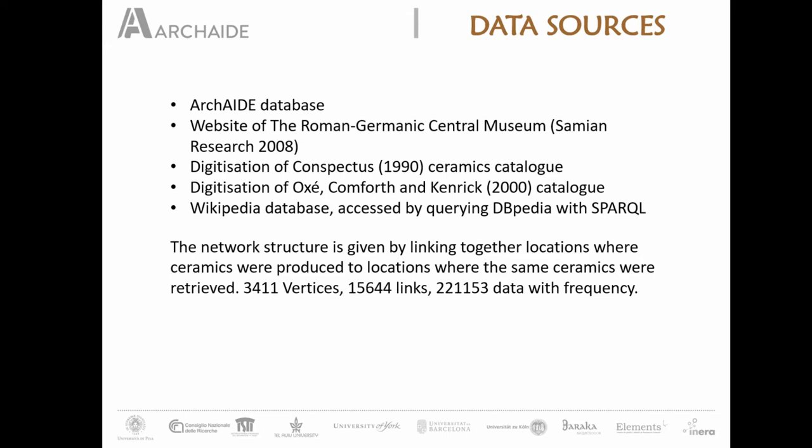In this way we were able to create a network structure by linking together locations where ceramics were produced and locations where the same ceramics were retrieved. At the end of our work, the network is made of 3,411 vertices, 50,645 links, and more than 2,000 data points with frequencies — indicating how many sherds of a given type were found in a certain location.